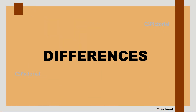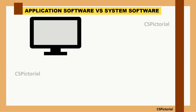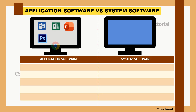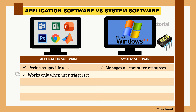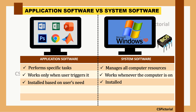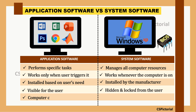To summarize the key differences: Application software examples include Microsoft Word, Excel, PowerPoint, Adobe Photoshop, Google Chrome, and MATLAB. System software examples include Microsoft Windows and BIOS. Application software performs specific tasks, while system software manages all computer resources. Application software works only when the user triggers it, whereas system software works whenever the computer is on. Application software is installed based on the user's need, while system software is installed by the manufacturer. Apps are visible to the user, but the operating system and other system software are hidden. A computer can run without application software, but it cannot run without the operating system, device drivers, firmware, and other system software.